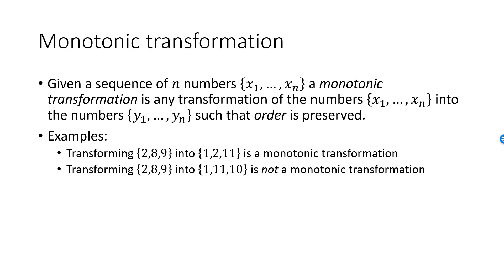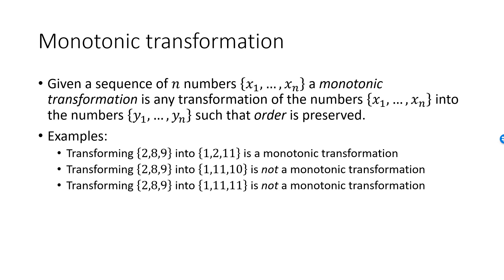On the other hand, if I transform 2, 8, 9 into 1, 11, and 10, such a transformation is not monotonic — the third number in the transformed sequence is now smaller than the second, and order is not preserved. Even if you transform 2, 8, 9 into 1, 11, 11, the transformation will not be monotonic. Since 9 is strictly greater than 8, my third transformed number must be strictly greater than my second, but here they are equal.